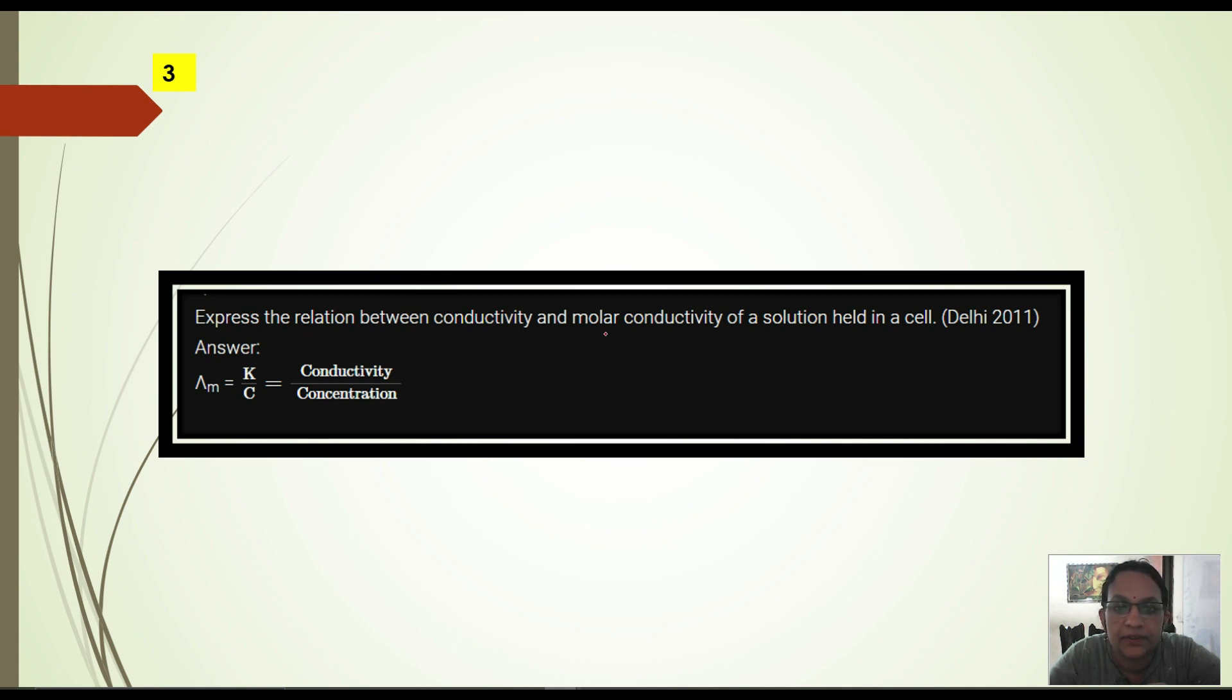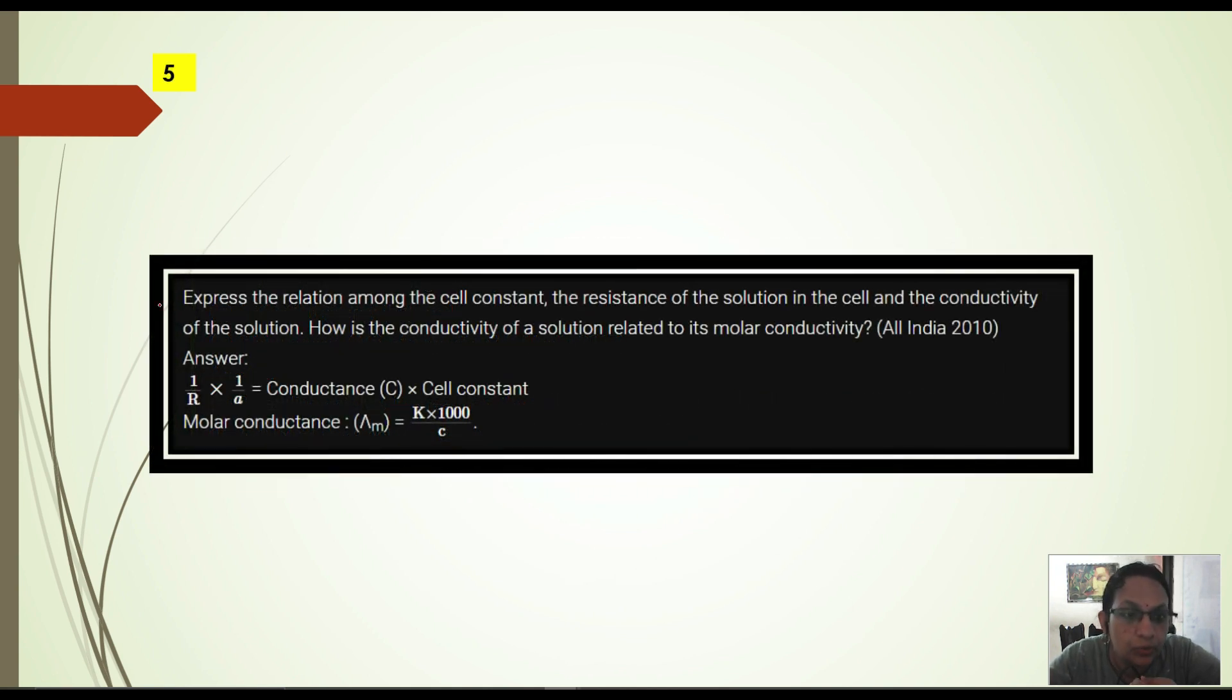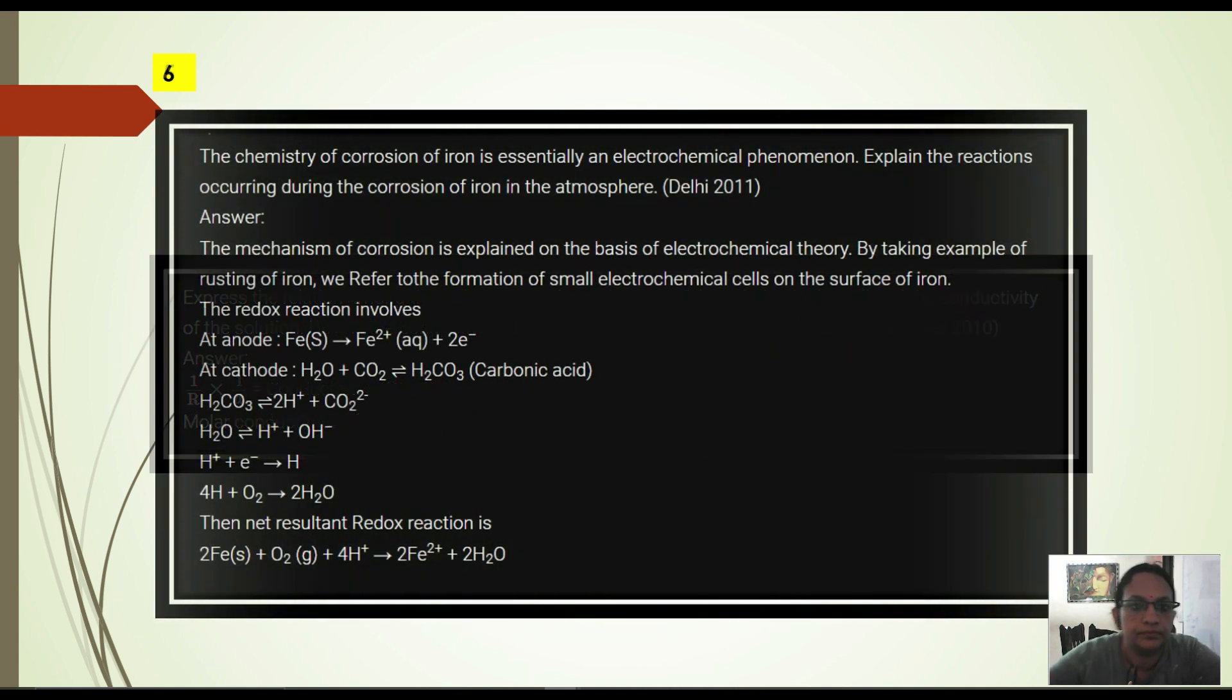You have to express the relation between conductivity and molar conductivity of a solution. So you can see this: Conductivity divided by concentration is equal to molar conductivity. Next. What is the effect of adding a catalyst on activation energy and Gibbs free energy? We just saw that activation energy is lowered down by catalyst. But Gibbs energy of a reaction - catalyst does not alter Gibbs energy. Remember this can be asked repeatedly. Express the relation among cell constant - this is your cell constant L by A, then resistance of a solution in a cell, conductivity of a solution, and how is the conductivity of a solution related to molar conductivity. You can see it's 1 by R into this 1, L by A which is called cell constant. This is molar conductivity: K into 1000 divided by C.